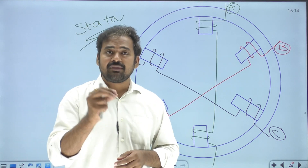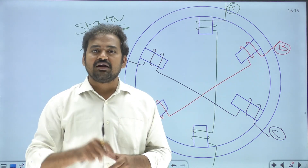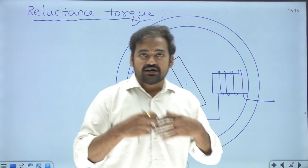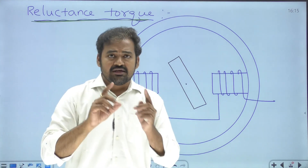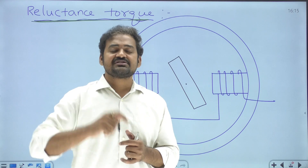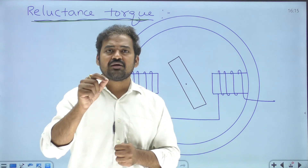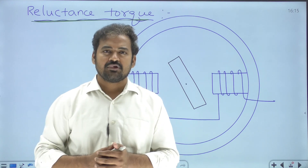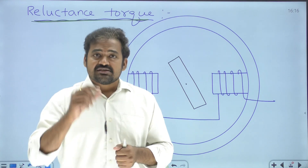Now let us talk about the rotor magnetic circuit. There are two types of rotor designs: variable reluctance type and permanent magnet type. For the variable reluctance type rotor, we first need to understand what is meant by reluctance torque. The torque is created due to the reluctance difference between stator and rotor. Reluctance between stator and rotor depends upon the length of the air gap — reluctance of the air gap is directly proportional to the length of the air gap.